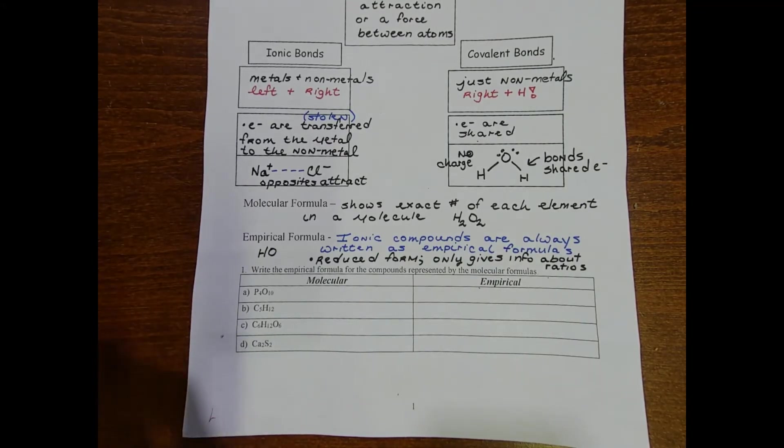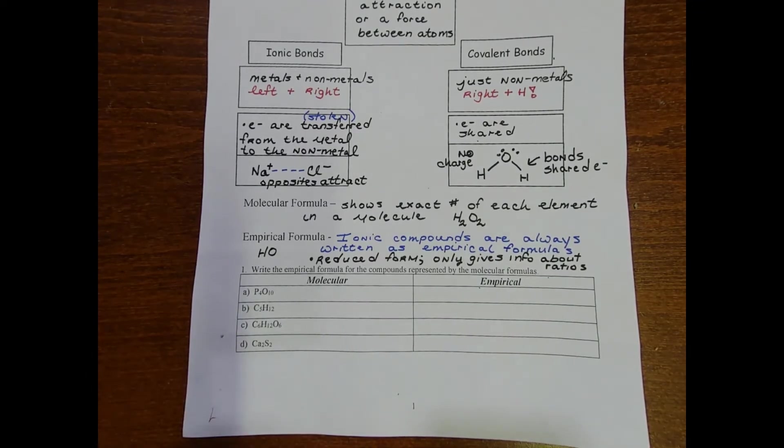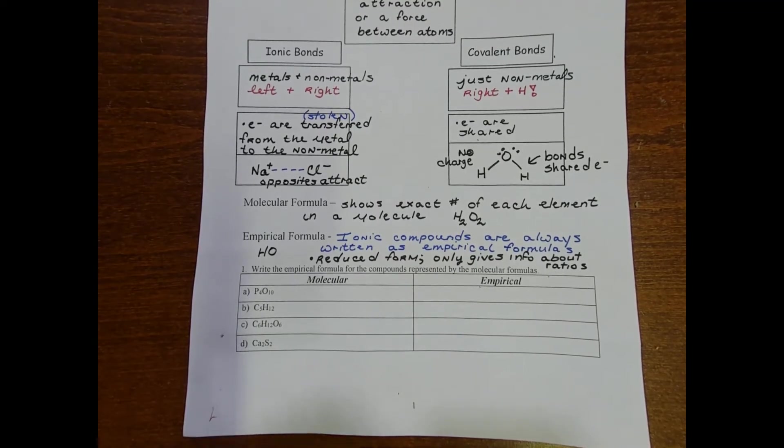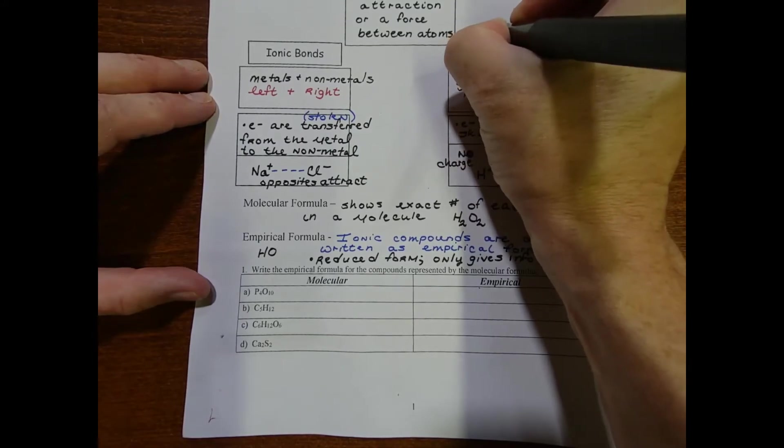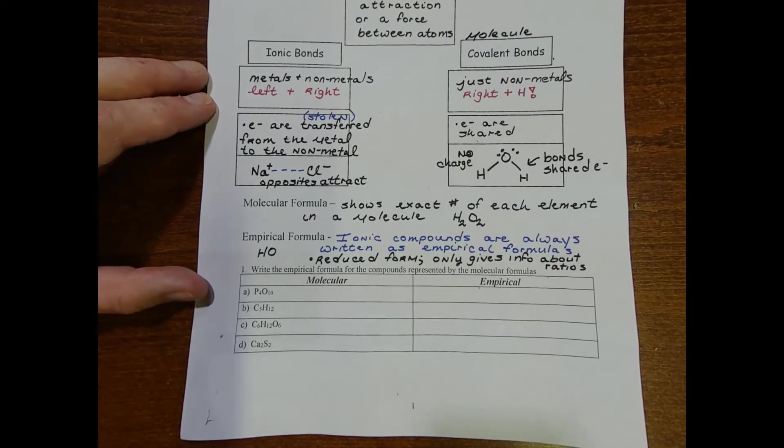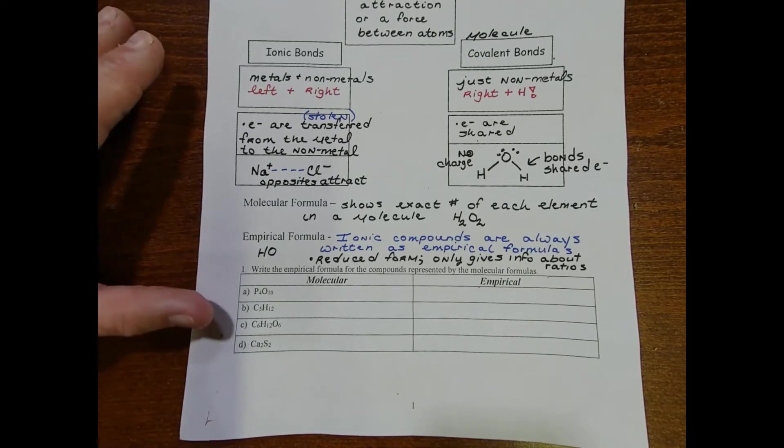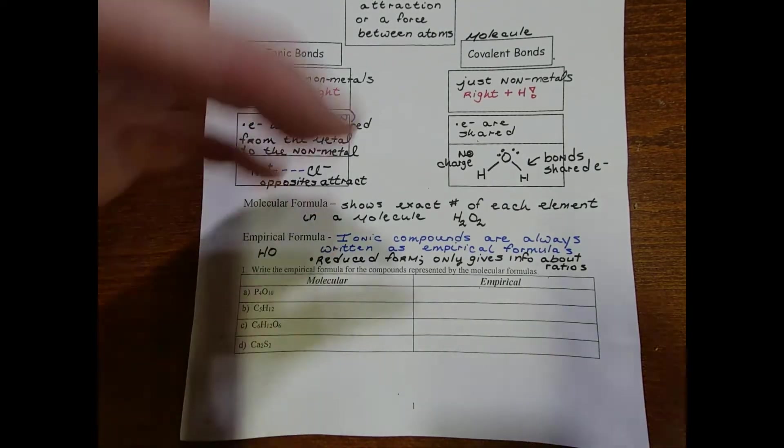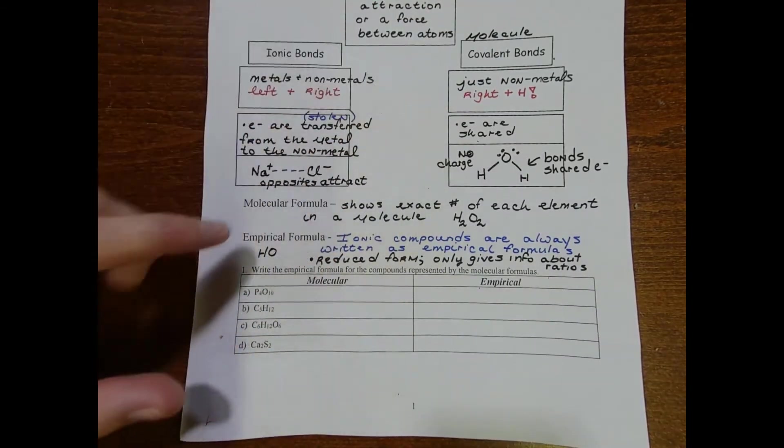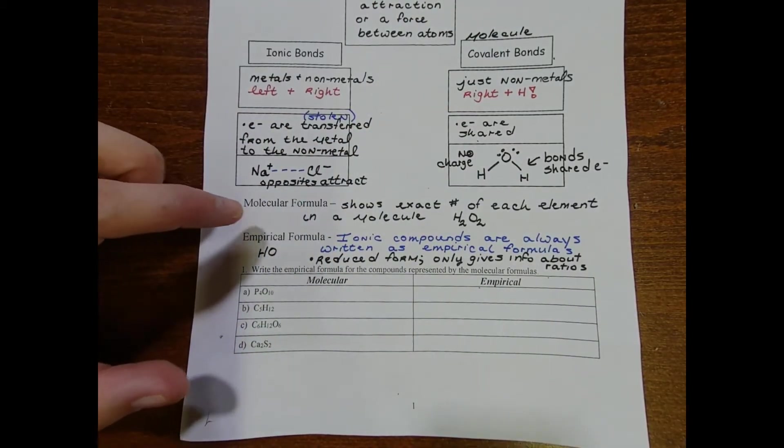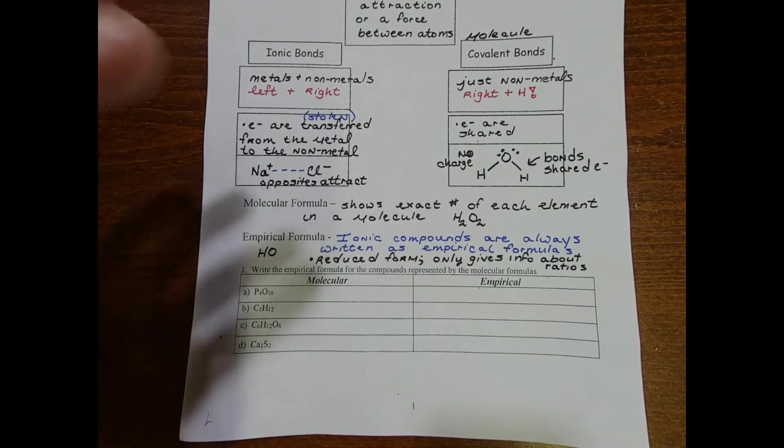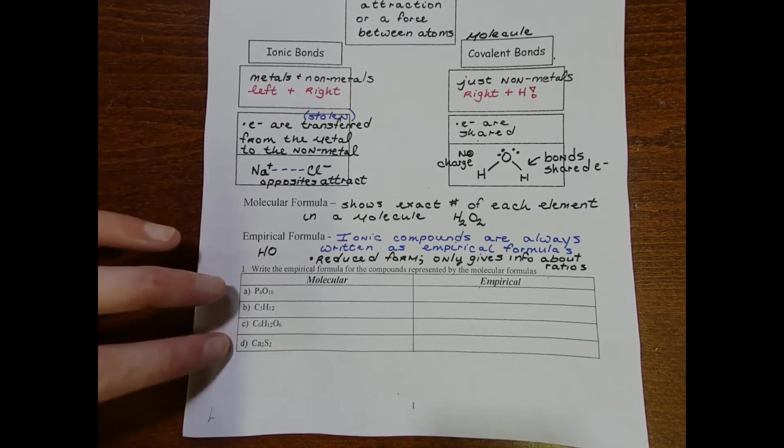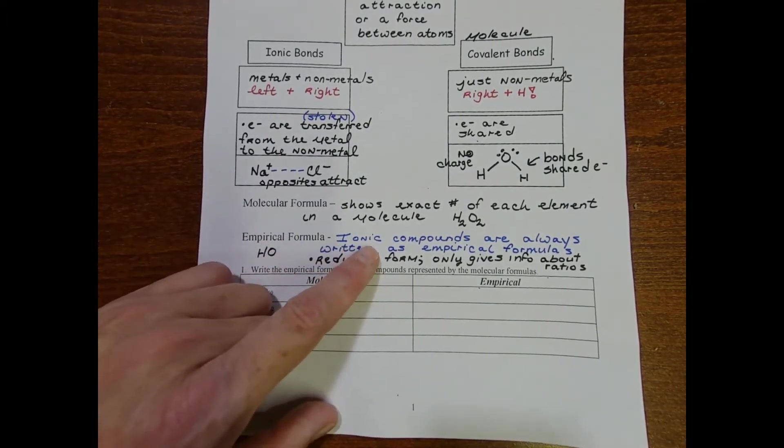For molecular or covalent compounds, and we should also make note of that on this first page here, typically when you talk about something being a molecule you're implying that it's a covalent molecule. These are cohesive units, singular units, and so the molecular formula is preferred.